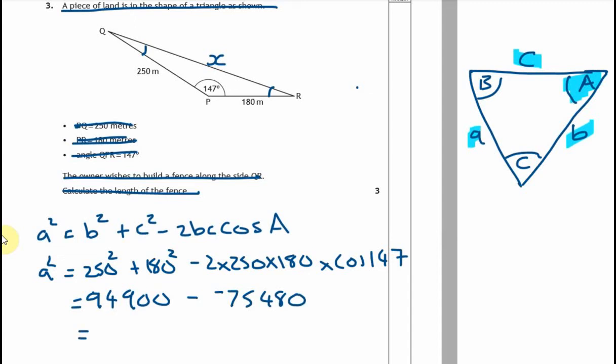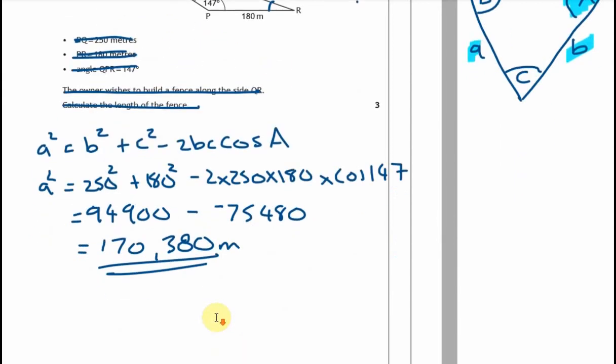So if we do 94,900, we're going to add 75,480. And that's given me 170,380. Now, a lot of folk are going to stop there and going to go, oh, look at that. That is a big fence, isn't it? 170 kilometres. Oh, I'm surprised that's so big. A lot of folk are going to stop at that point.